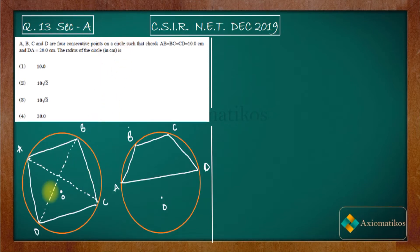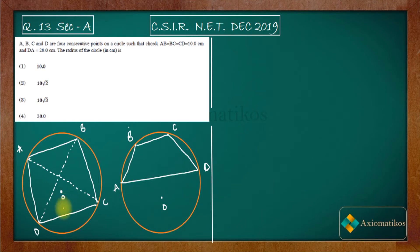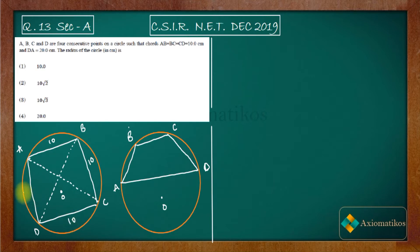These are the only two possibilities: either the center lies inside the quadrilateral, or the center lies somewhere outside the quadrilateral. Let us think about what happens in each case. In this figure, AB is 10, BC is 10, CD is 10, and DA is 20.